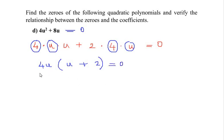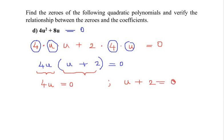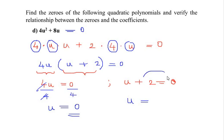From the first term, u is left; from the second term, two is left — so we have (u + 2) = 0. We now have two factors: factor one is 4u and factor two is (u + 2). Equating each factor to zero: 4u = 0, so dividing both sides by 4 gives u = 0. For the second factor, u + 2 = 0, so u = -2.